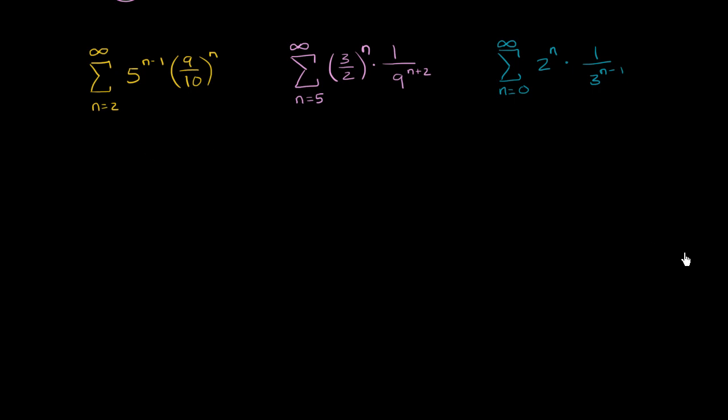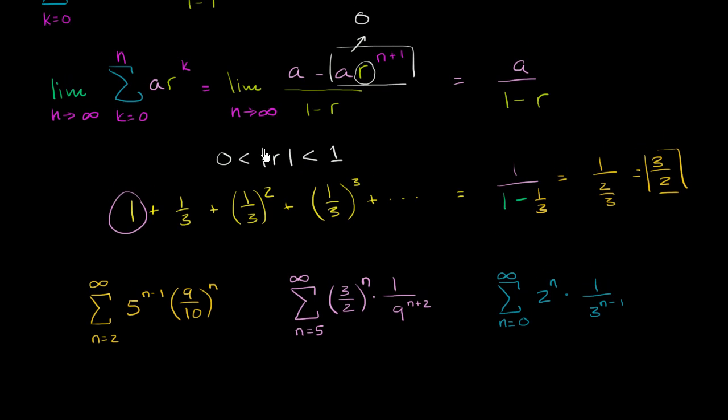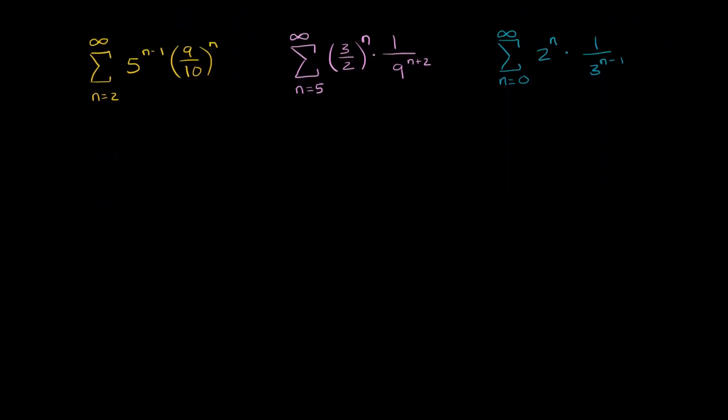The general way to think about it, and we've seen it in a previous video, is that you are going to have a converging geometric series, infinite geometric series, if the absolute value of your common ratio is greater than zero and less than one. So we just have to think about what is the absolute value of the common ratios over here. And it's not as obvious because they didn't just write one term or one number to an exponent. They wrote several numbers to an exponent, so we'll have to do a little bit of algebraic manipulation.